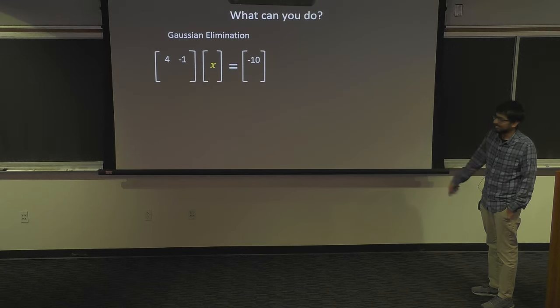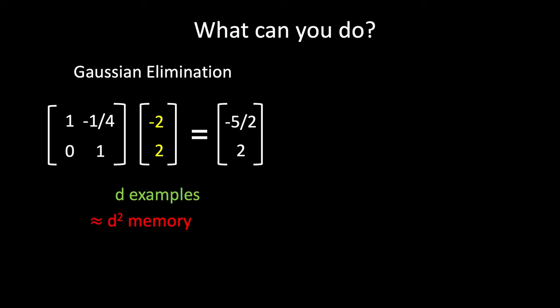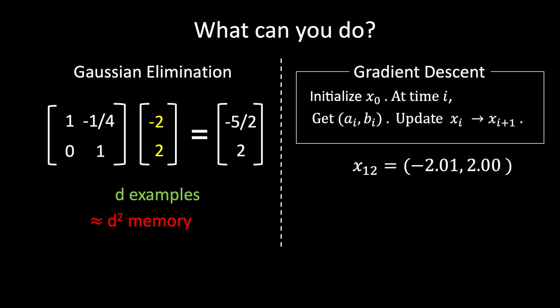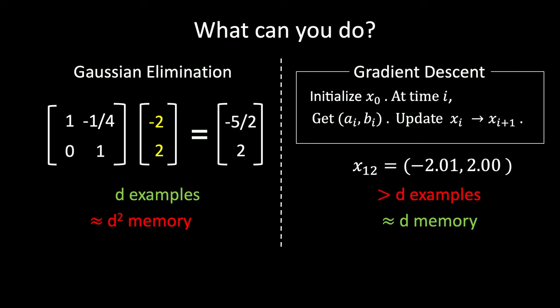What can we do here? You can always do Gaussian elimination: in two dimensions, store two vectors and you're done. In d dimensions, you need d examples but d-squared memory because you're storing d things in d dimensions. What if you wanted to solve this with less memory? Go back to gradient descent — it takes more steps, needs more than d examples. In this case where samples come from a nice Gaussian distribution, it needs d log(1/ε) examples. But it only requires about d memory. We want to understand if there's anything between these two approaches.